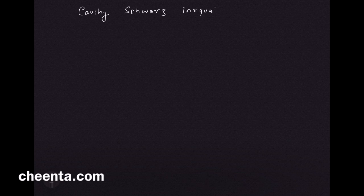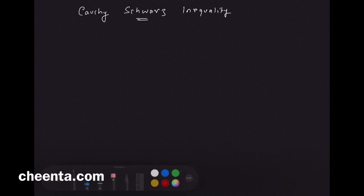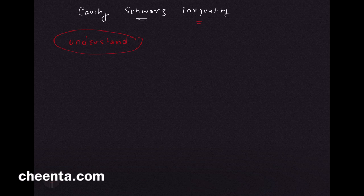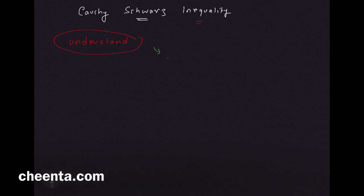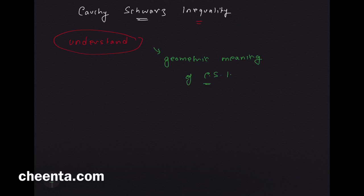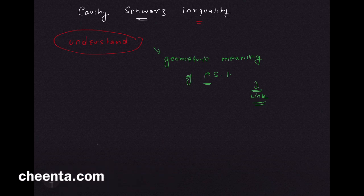The Cauchy-Schwarz inequality is a very powerful tool in algebra. There is a very simple way to really understand this inequality — it has a geometric meaning. A link in the description will take you to some tutorial problems which will help you master the ideas presented here, so I strongly suggest you look into that link.